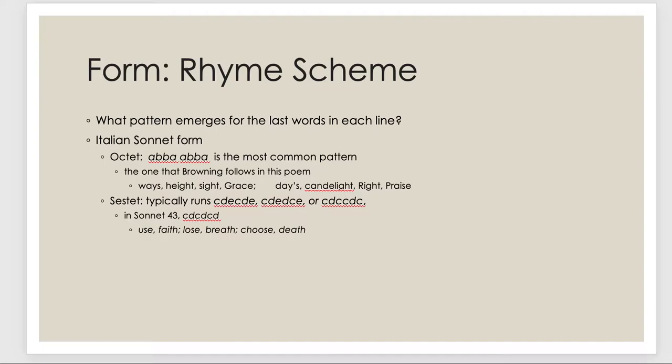So we want to talk a little bit about next, the rhyme scheme, what pattern emerges for the last words in each line, right? So in an Italian sonnet form, the octet will have this rhyme scheme, ABBA. So I've listed below for you, the end of the lines are ways, height, sight, grace, right? A, ways, that's one form. Height, that does not rhyme with ways, so that's a different, that's a B. And then B, again, because sight rhymes with height, and then grace rhymes with ways. So A, B, B, A, same thing again. Days, candlelight, right, praise, right? So that's the rhyme scheme. And then the sestet runs lots of different ways. In sonnet 43, this sonnet we're talking about, it's use faith, lose breath, choose death, right? So C, D, C, D, C, D. I hope you see that it has to be the letters C and D because we already use the letters A and B to describe the octet. So those are two parts of form that are very important to note.